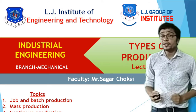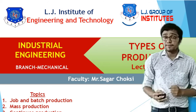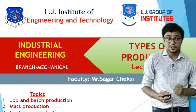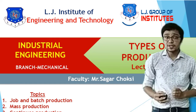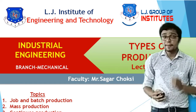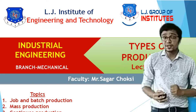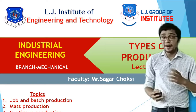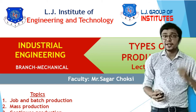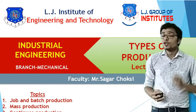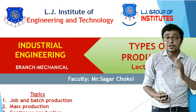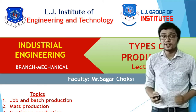In different types of production systems there are mainly 4 types of production. First is Job type production, number 2 is Batch type production, third is Mass type production, and fourth is Continuous production system. So let's start the lecture on Types of Production System.